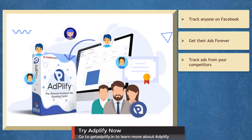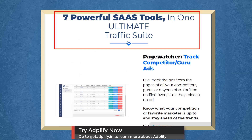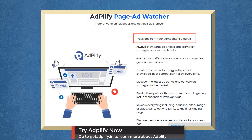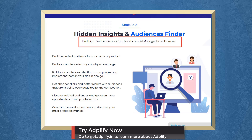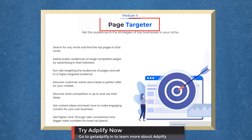We have a marketing app that allows you to track ads from your competitors. Adplify gives you seven popular SaaS tools for total Facebook ads domination. With Page Ad Watcher, you can track ads from your competitors. With Hidden Insights and Audiences Finder, you can find high-profit audiences that Facebook Ad Manager hides from you. Booster conversions with Behavioral Retargeting. With Page Targeter, you can get the audiences and strategies of top businesses in your niche.